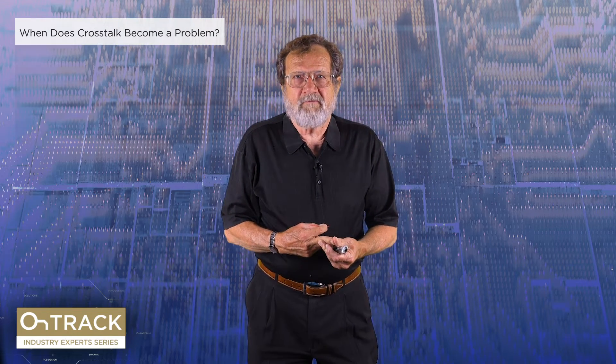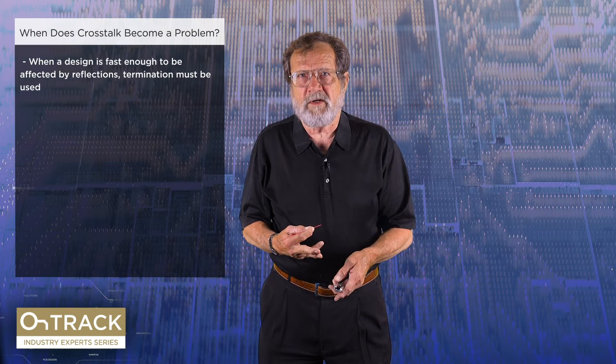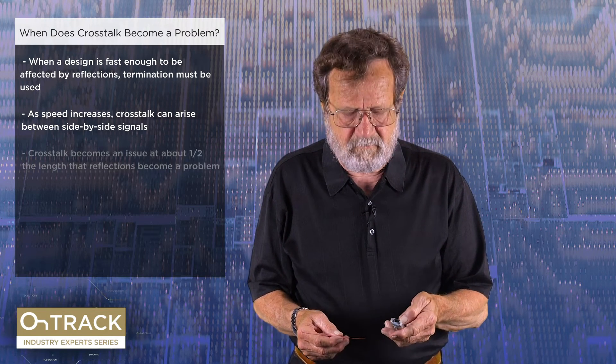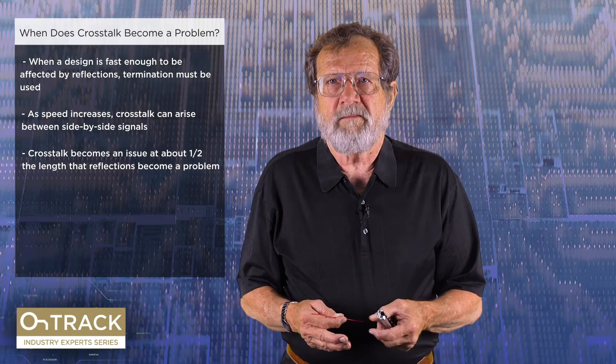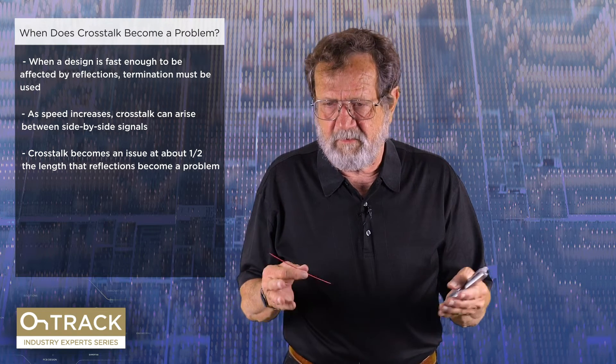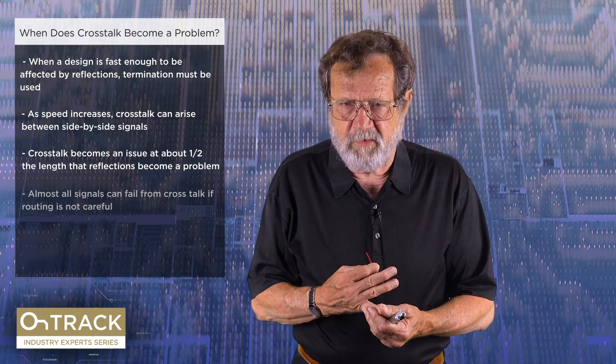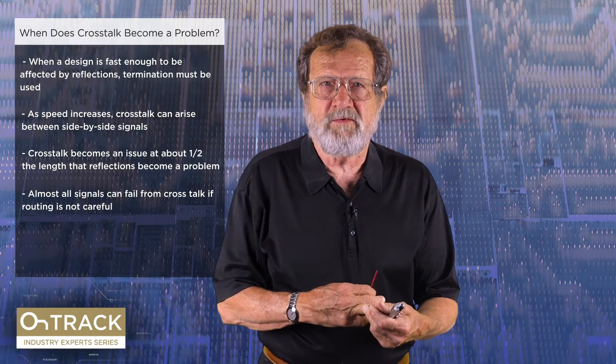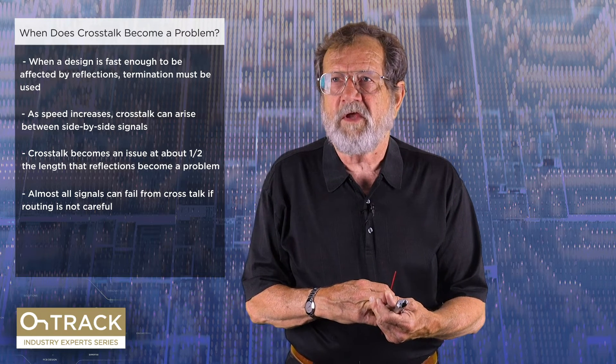That's not all the bad news. Let's now look at what crosstalk has to do with it. After you've figured out how to manage reflections by controlling impedance and using terminators, the next thing you need to think about is traces running side by side, which interact with each other in a negative way — we call that crosstalk. It's a complex question when crosstalk becomes a problem, but roughly it becomes an issue at about half the length at which reflections begin to be a problem. With 100-picosecond edges, you have to manage both crosstalk and reflections on every board.